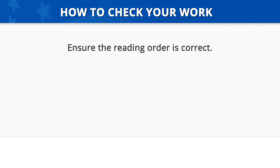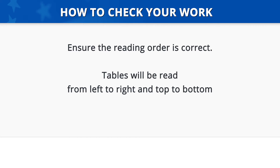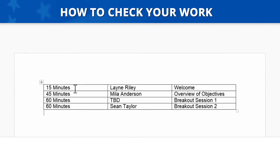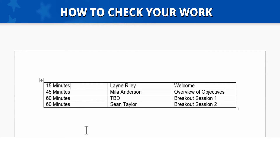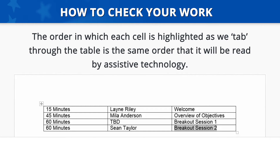How to check your work. To check a layout table for accessibility, first ensure the reading order is correct. Tables will be read from left to right and top to bottom. To check the reading order, place your cursor in the first cell of the layout table, then press the Tab key on your keyboard to navigate through the table. The contents of each cell are highlighted as we proceed from cell to cell in a left-to-right order. When we reach the end of the first row, the focus will jump to the first cell of the second row. The order in which each cell is highlighted as we tab through the table is the same order it will be read by assistive technology. It is important to ensure the tab order matches the visual layout so that information is provided in a meaningful and logical order.